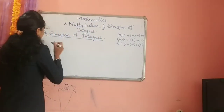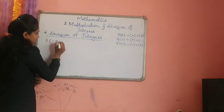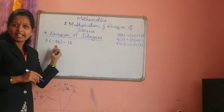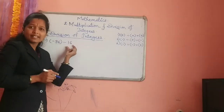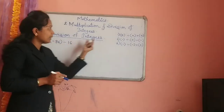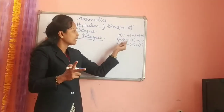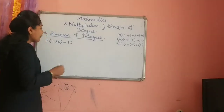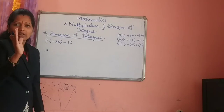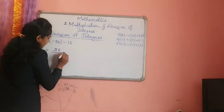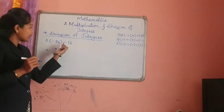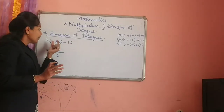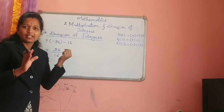The first example is minus 96 divided by 16. If you observe, minus 96 is a negative number and positive 16 is positive — so we apply the second rule: negative divided by positive gives a negative answer. We already know the answer will be negative. For now, let's remove the negative sign and work with 96 divided by 16.